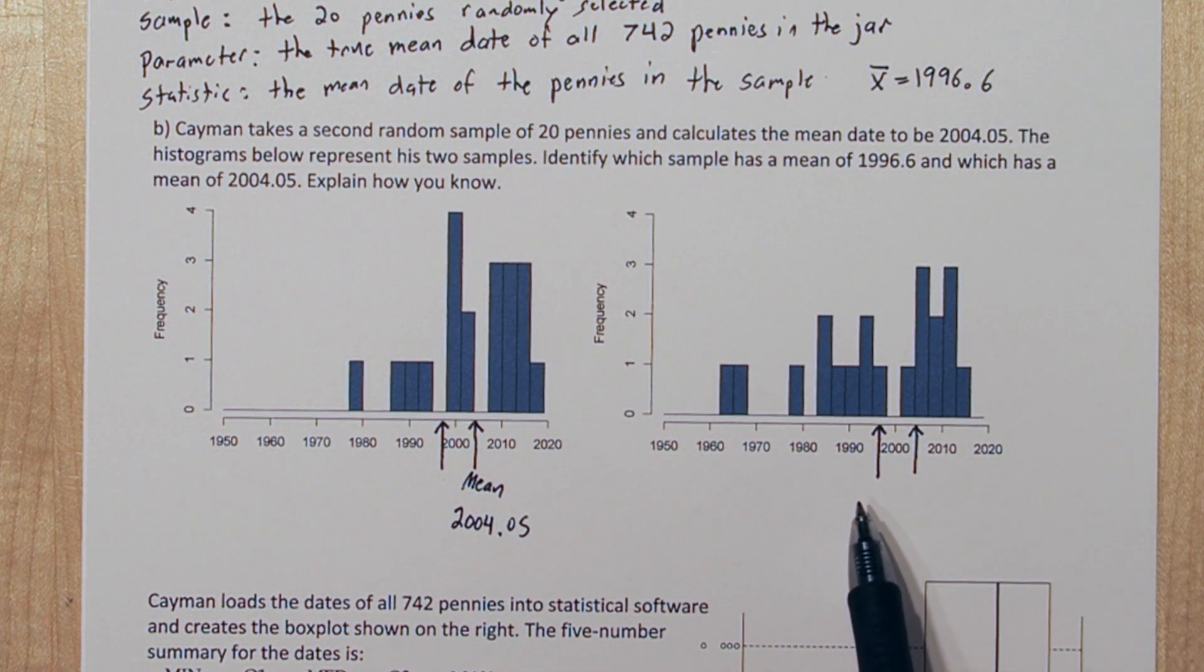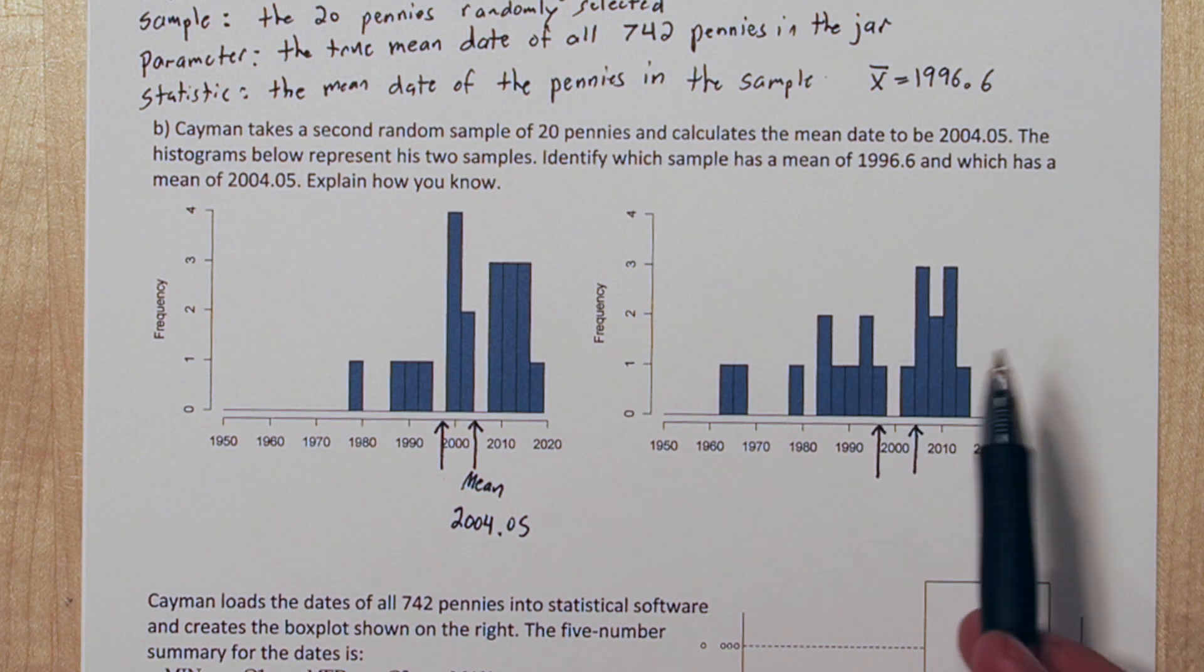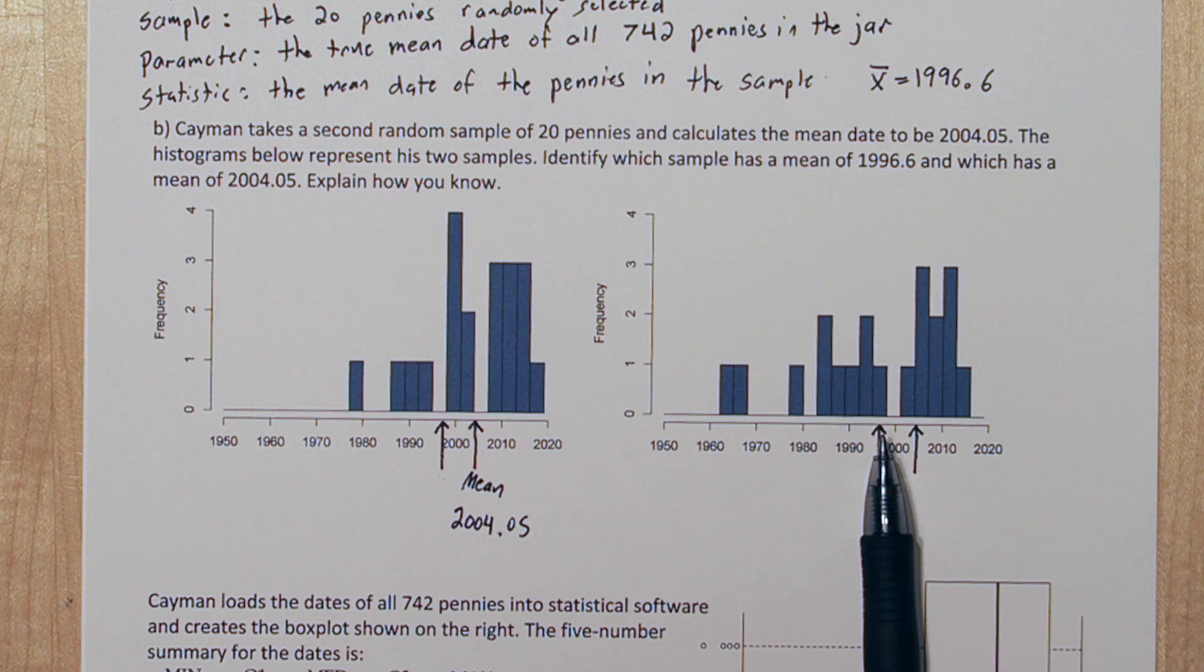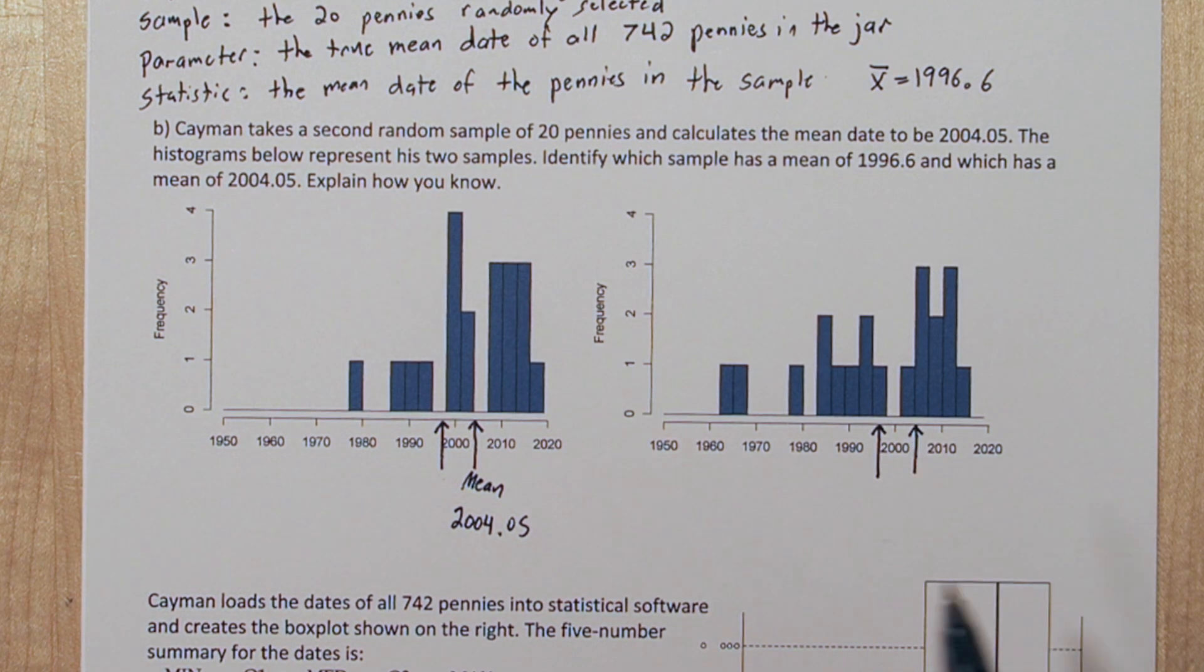Let's just check that the mean makes sense to be 1996.6 in this sample. If this was a physical shape, that does appear to be about the balancing point, so that must be the mean on this one.